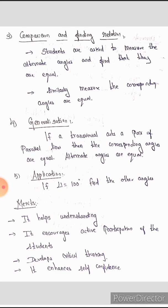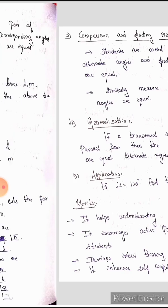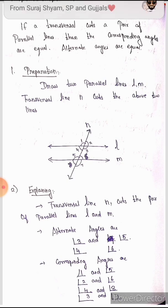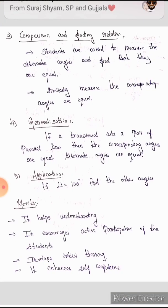For example, if angle 1 is equal to 100, find the other angles. So angle 100 is there. The corresponding angle — angle 5 — is also 100. The solution will apply.